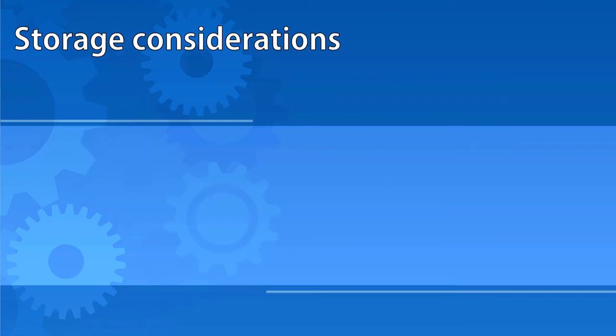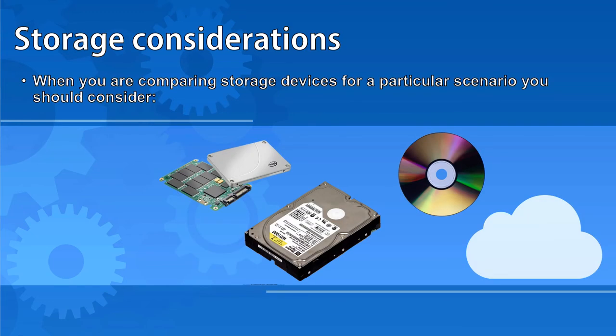When asked to compare storage devices for a particular scenario, you should consider the following factors. Cost: some cloud providers offer a certain amount of storage for free, and for the right price will provide unlimited storage. Otherwise, in order from most to least expensive: SSD is the most expensive, followed by magnetic storage, and optical disks are the cheapest.